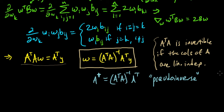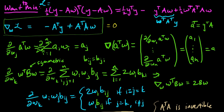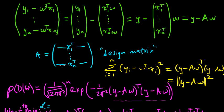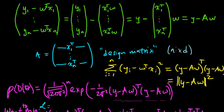The problem is A is not invertible. A is this design matrix — it's N by D, because each of our input points was in D-dimensional space. And this isn't even necessarily a square matrix, so in general this is not going to be invertible.